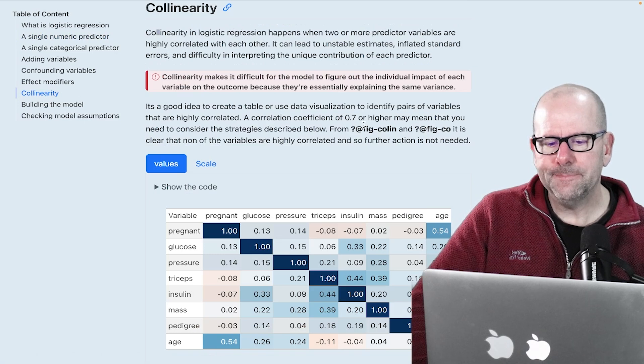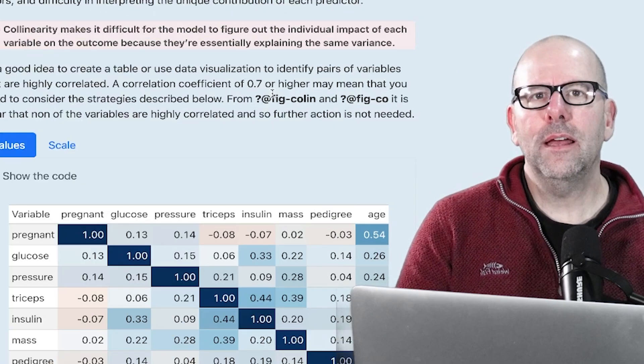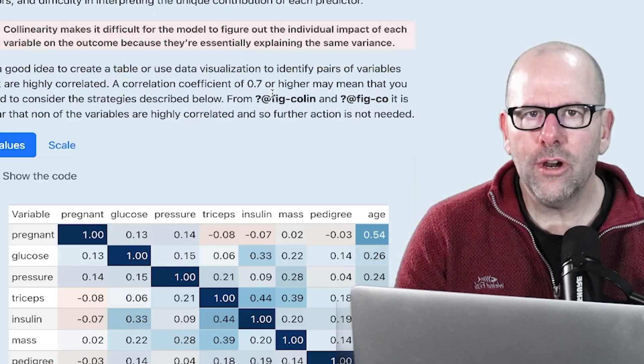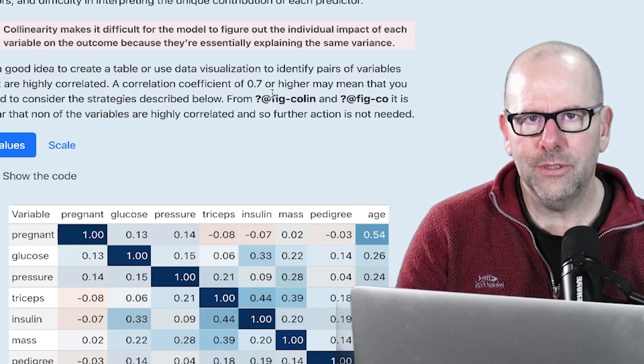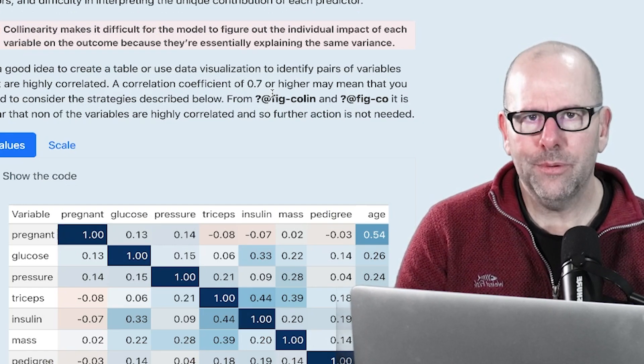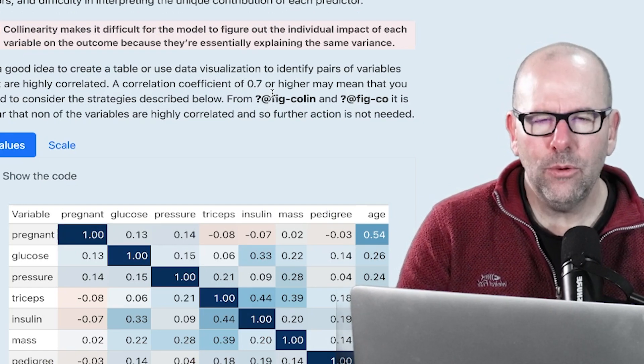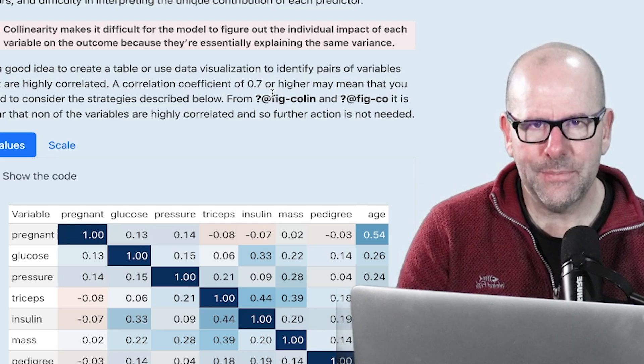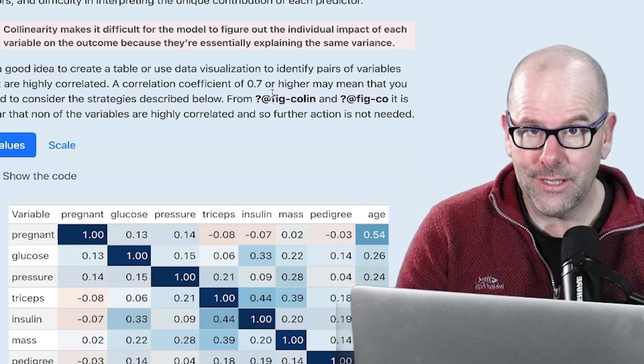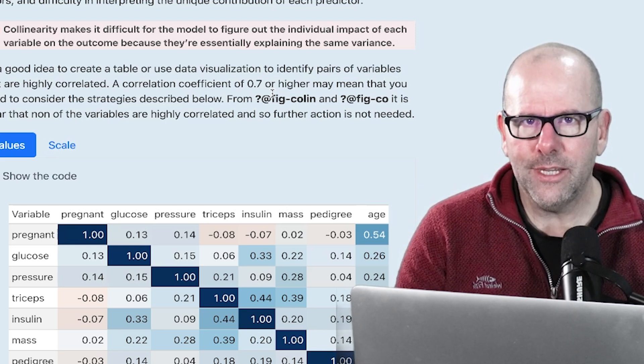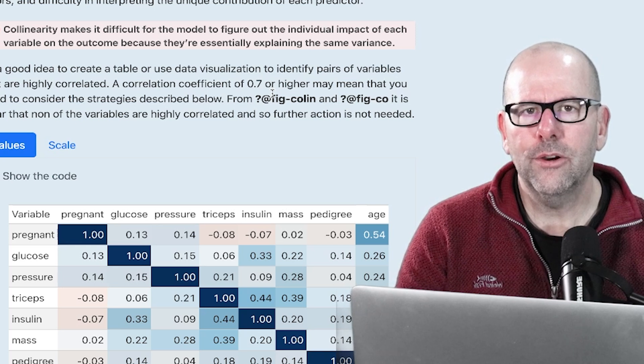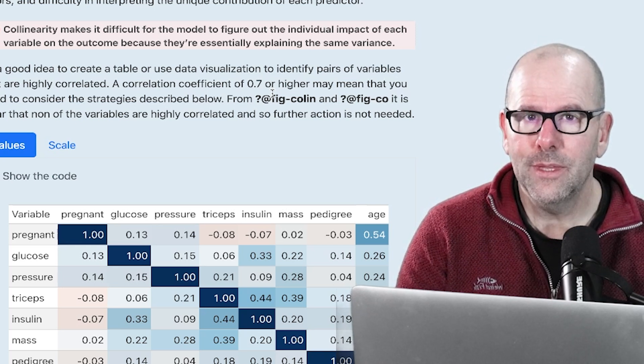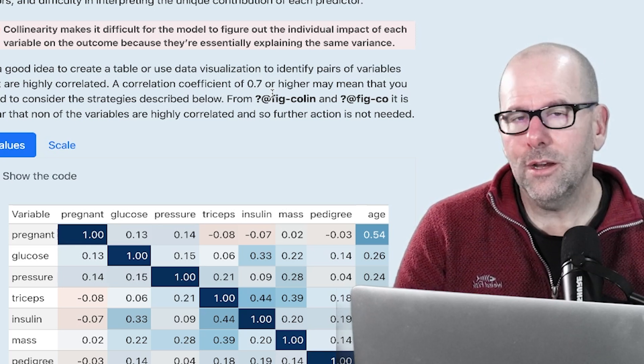Let's talk about collinearity. If there is a strong correlation between your predictive variables, you may have a problem. A weak correlation isn't anything to get upset about. Generally, we wouldn't get out of bed for a correlation of more than 0.7 correlation coefficient, and more than 0.8 we would be concerned. We'd look at this quite carefully and potentially remove one of the variables.